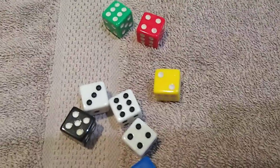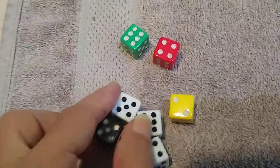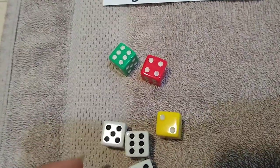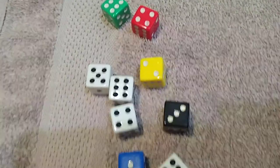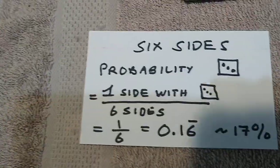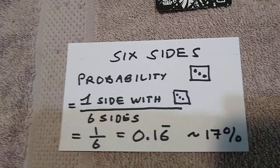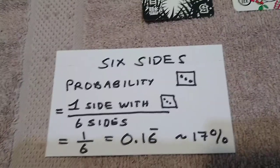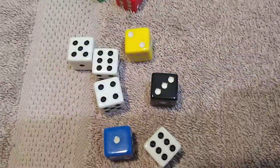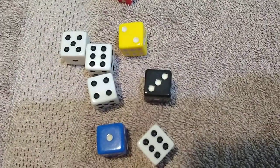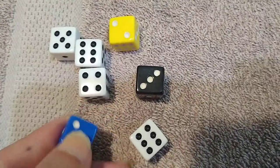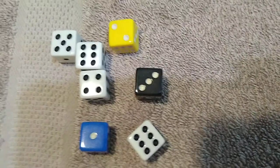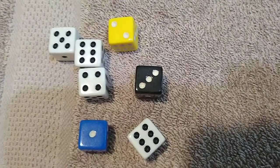For dice, the probability of getting a three on a die, or any other particular side, is simply one side divided by the total number of sides. The probability is one divided by six for each side. It doesn't matter what's on the sides — here we have pips — the probability of landing on that particular side is one out of six.